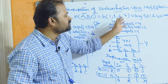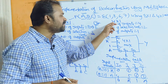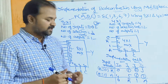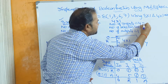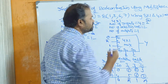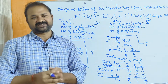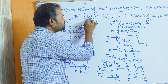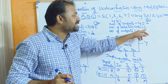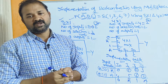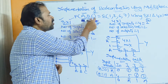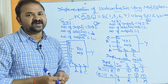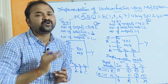Now let us implement using a 4-by-1 multiplexer. A 4-by-1 multiplexer means the number of inputs is 4 and the number of outputs is 1. We can write 4 as 2 to the power 2, so the number of selection lines is 2. But in the problem we have 3 boolean variables — a, b, c — and the selection lines are only 2, so we take 2 variables as selection variables and the remaining variable as the input variable.